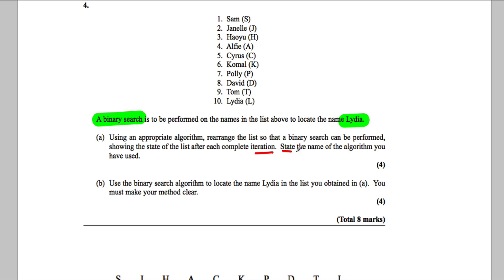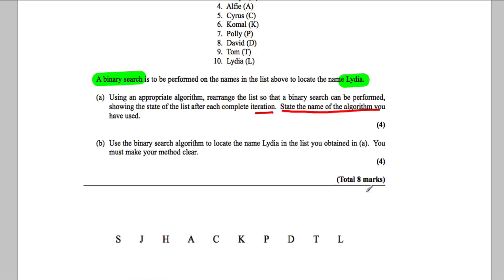Now you will know a binary search can only happen if the names are in alphabetical order, so the first thing we're going to do is use an algorithm to make them in alphabetical order. I like a bubble sort, so I'm going to use a bubble sort, but you could also use a quick sort.